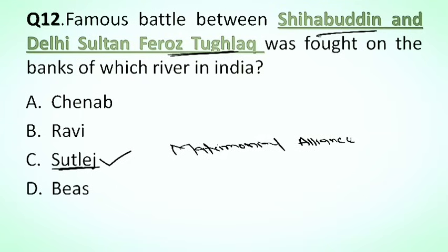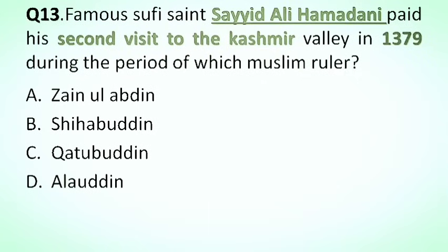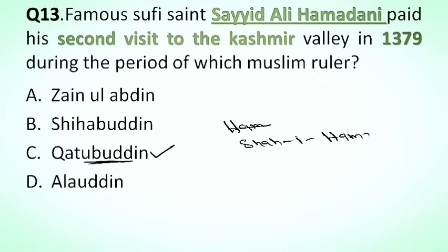Our next question is: the famous Sufi saint Shah-i-Hamadan (Syed Ali Hamdani) paid his second visit to Kashmir Valley in 1379 during the period of which Muslim ruler? Options: A. Zainul Abidin, B. Shihabuddin, C. Qutbuddin, D. Alauddin. The correct answer is option C, Qutbuddin. He visited during the time period of Qutbuddin. Syed Ali Hamdani is also known as Shah-i-Hamadan in Kashmir Valley.